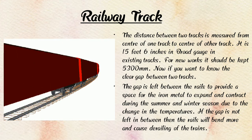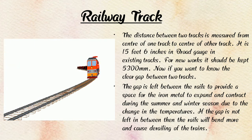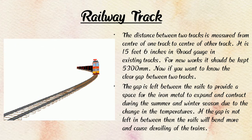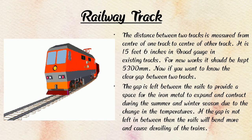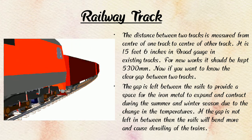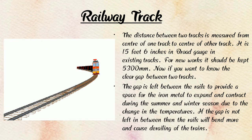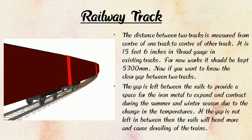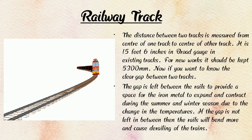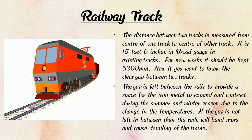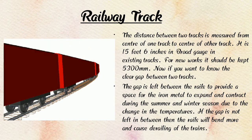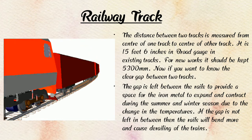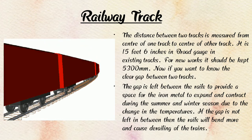Due to the change in temperatures, if the gap is not left in between, then the rails will bend more and cause accidents. That is why the small gap is left between the two railway tracks. Children, you all understand why there is a gap between the two railway tracks — because temperature changes during the season and iron metal expands.